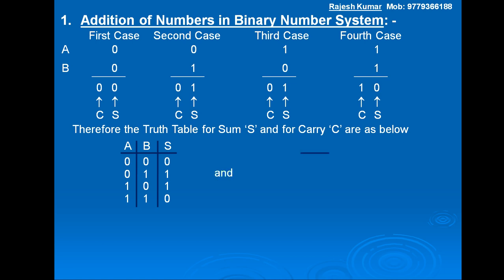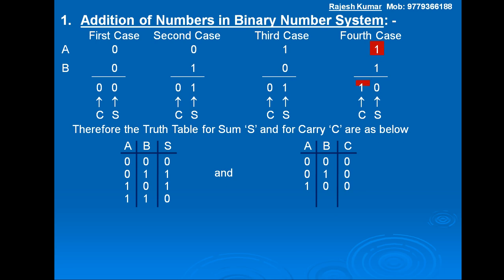Now the truth table for carry C, with inputs A and B and output carry C: first case A=0, B=0, carry=0; third case A=1, B=0, carry=0; fourth case A=1, B=1, carry=1. This is the truth table for carry C.